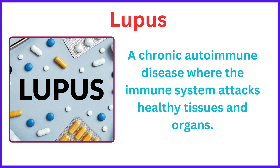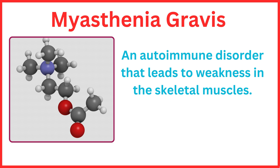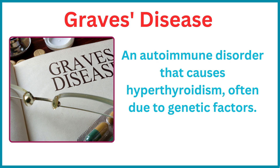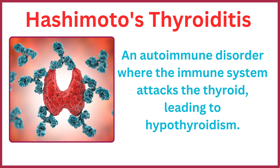Lupus is a chronic autoimmune disease where the immune system attacks healthy tissues and organs. Myasthenia gravis is an autoimmune disorder that leads to weakness in the skeletal muscles. Graves' disease is an autoimmune disorder that causes hyperthyroidism, often due to genetic factors. Hashimoto's thyroiditis is an autoimmune disorder where the immune system attacks the thyroid, leading to hypothyroidism.